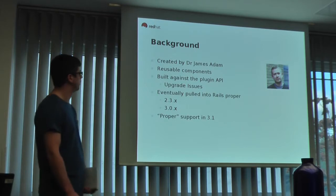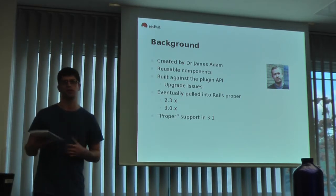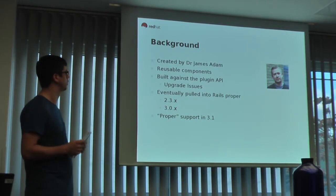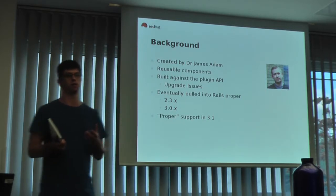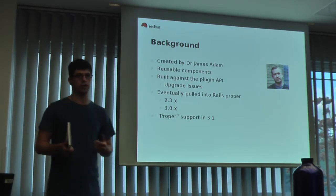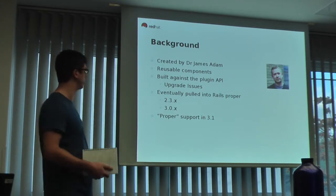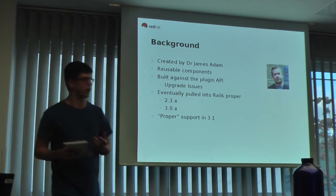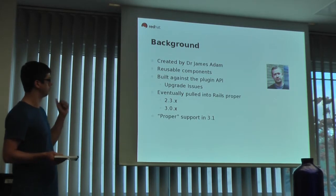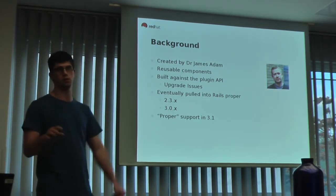So just a brief background: engines were essentially created by James Adam, who took a very similar approach to what David Heinemeier Hansson took when he first created Rails. He had a few different clients that he was doing the same thing for — he was from a media company — and decided to rip these things out and pull them into what he called an engine. Initially he built against the plugin API, but every time Rails upgraded the plugin API all these engines broke, so he rewrote them as a gem. That gem had quite a lot of traction and was eventually pulled into Rails, initially in 2.3, but proper support wasn't really added until Rails 3.1. So if you do want to use engines, I wouldn't recommend using anything less than 3.1.